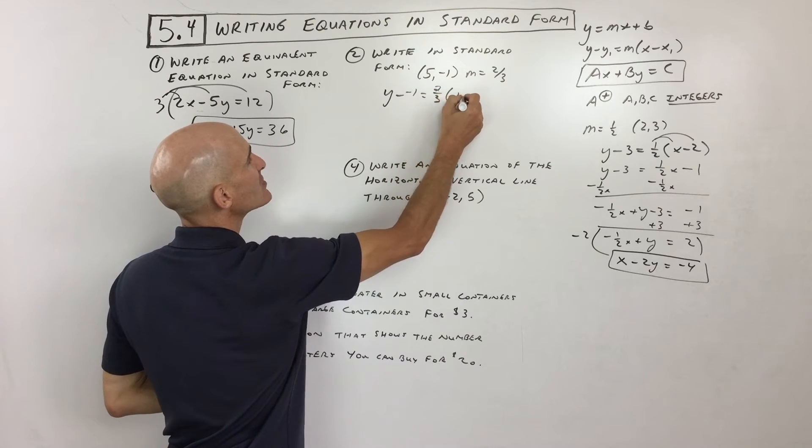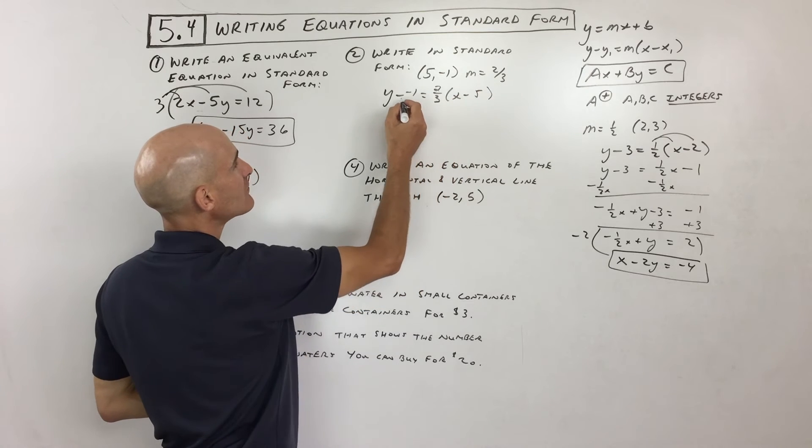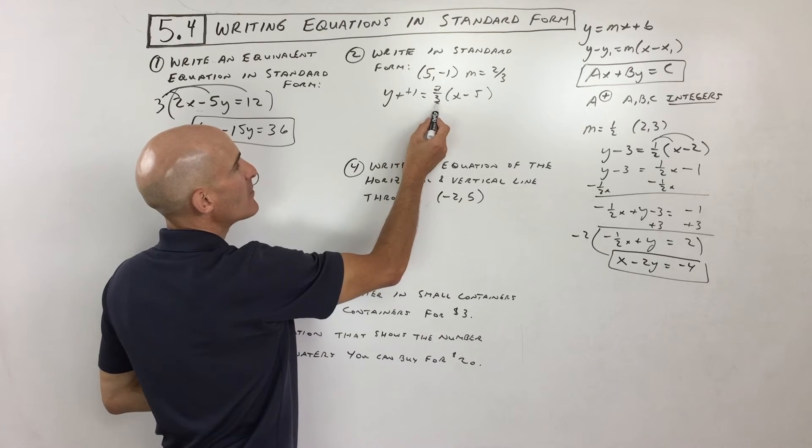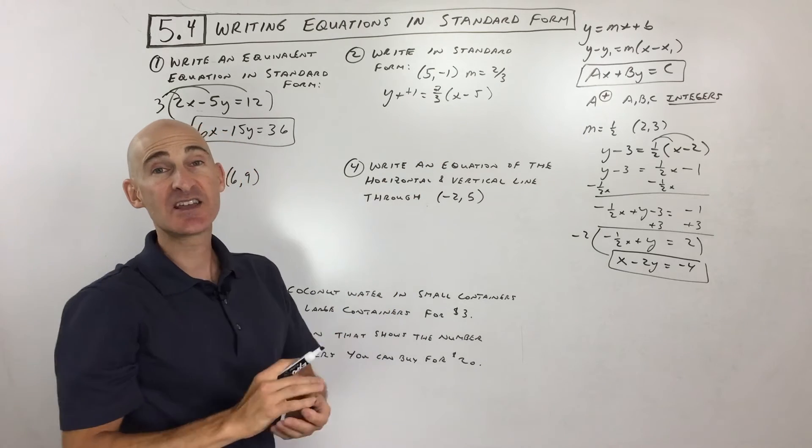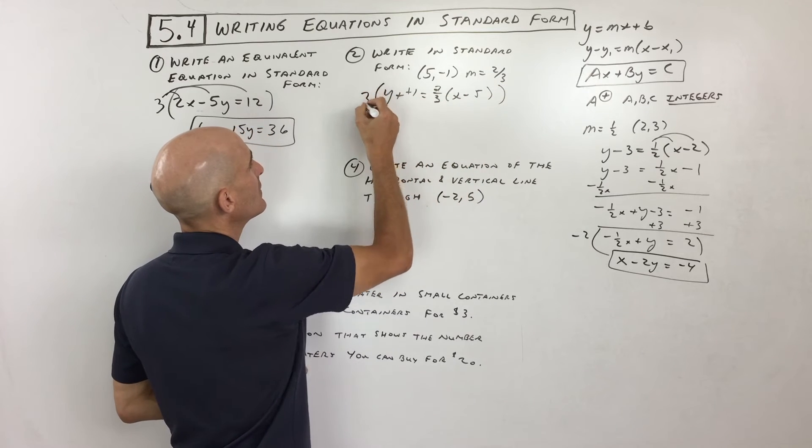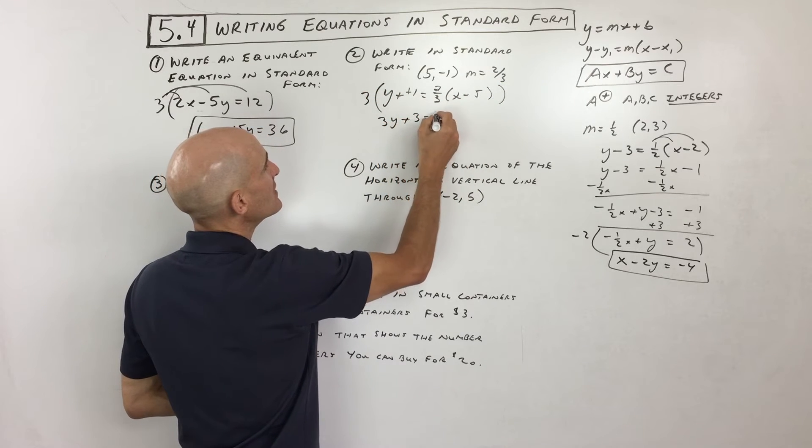When you subtract, it's like adding the opposite. I'm going to, you know what I'm going to do? I'm going to multiply through everything by 3 to get rid of that fraction. Okay, so if I multiply this entire equation by 3, that comes out to 3y plus 3 equals 2, because see these 3s cancel, x minus 5.